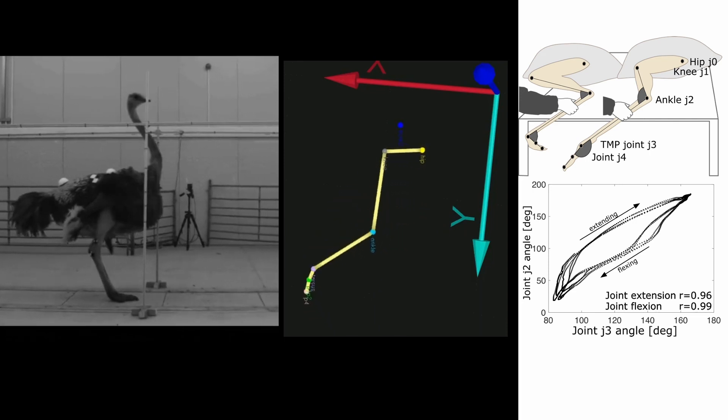The central nervous system was inactive in this experiment. Instead, the observed coupling arose only from passively connected tissue and was therefore mechanical.